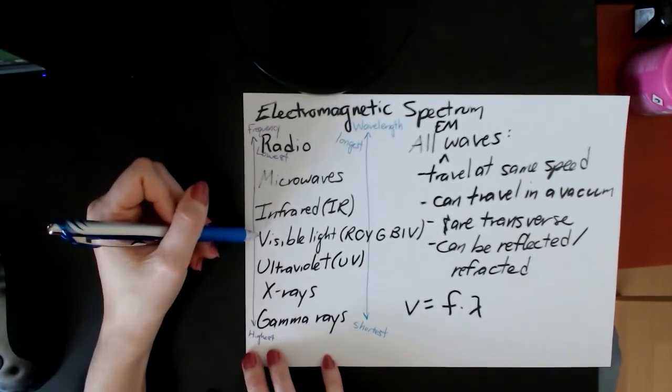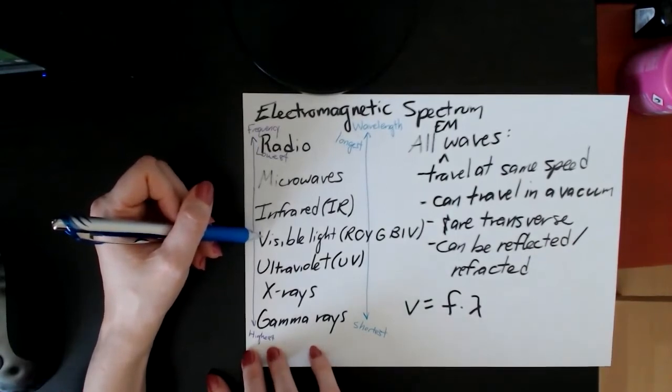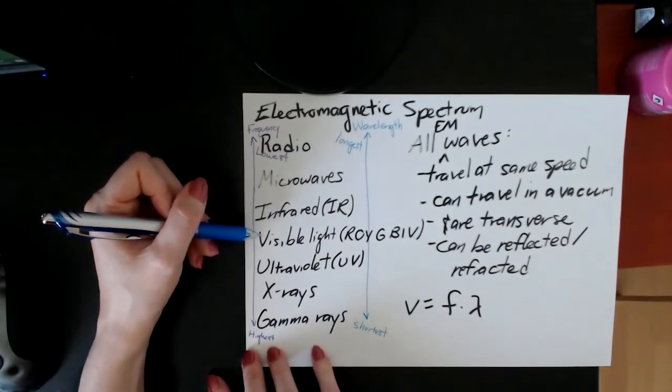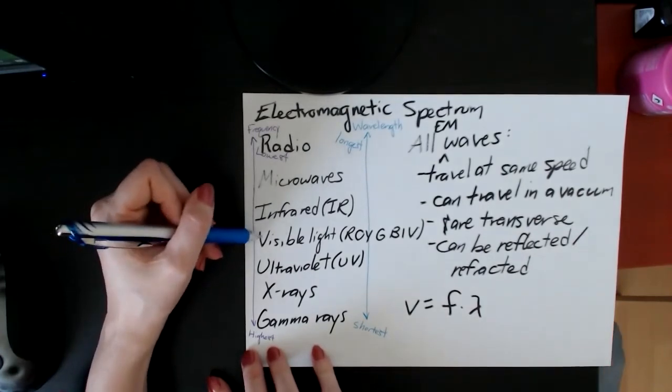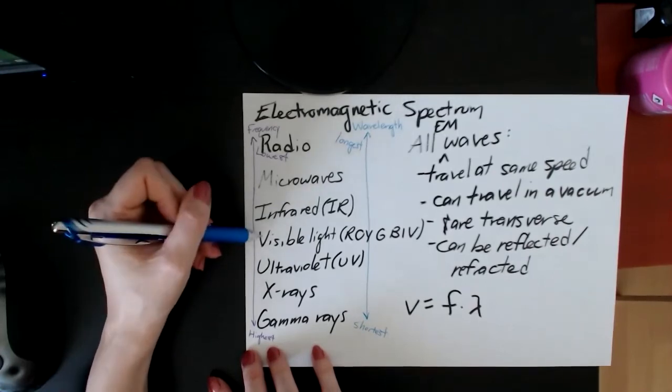Visible light is obviously used to see, but don't say that. Don't write that in a test. It is used for optical fibers and photography are the two main uses for it, and the danger of this is that it can cause blindness.